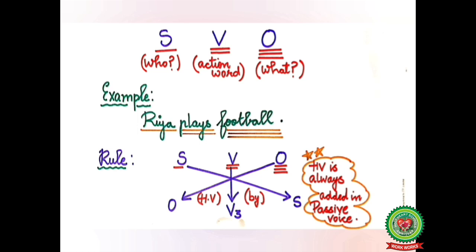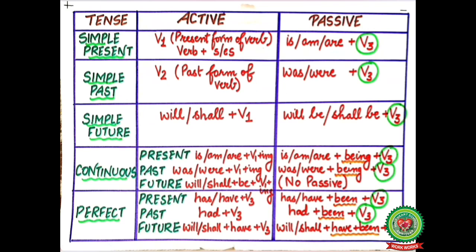Now we will discuss how to change active voice into passive. Subject will go to the last, object will come in the beginning, verb will remain at its place and will be replaced by its past participle form. We will add a helping verb in the passive voice, and before the subject we will use the word 'by'.